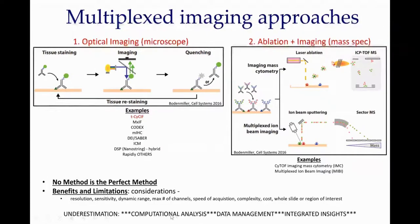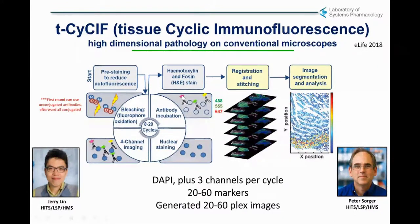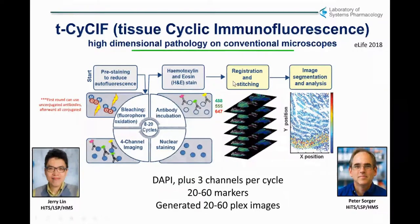Uniformly, there is clearly an underestimation of the computational analysis required to understand this data, the data management, and how you need different people with different expertise working together as a multidisciplinary team. The method we use is called tissue cyclic immunofluorescence (t-CyCIF), developed at the Lab of Systems Pharmacology at Harvard Medical School by Jerry Lin and Peter Sorger. Briefly, antibodies are directly conjugated to fluorophores — generally three antibodies — incubated with FFPE tissue, with four-channel imaging and a nuclear stain. Then photobleaching and successive cycles (8 to 20) are performed, data is registered and stitched to create 20-plex images, then used for image segmentation and subsequent analysis.